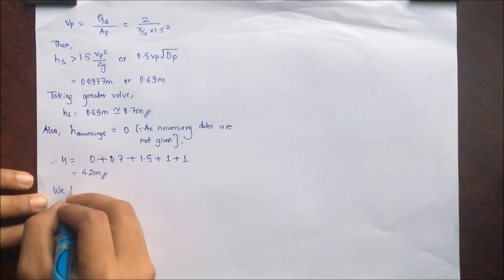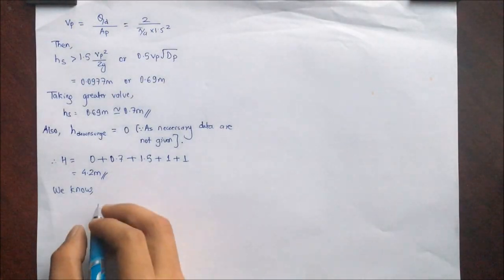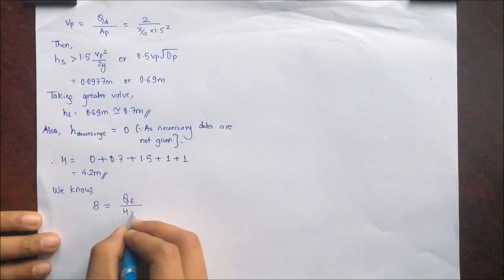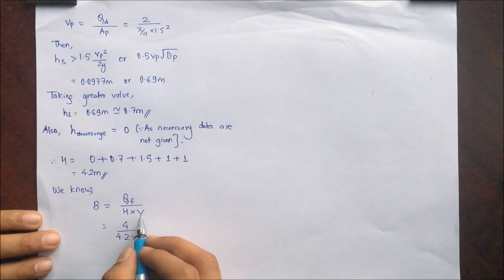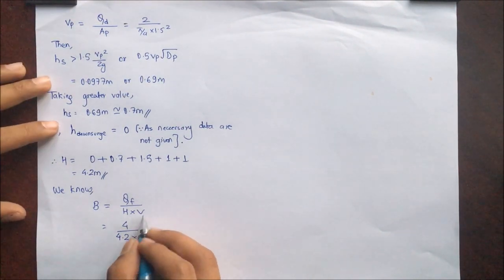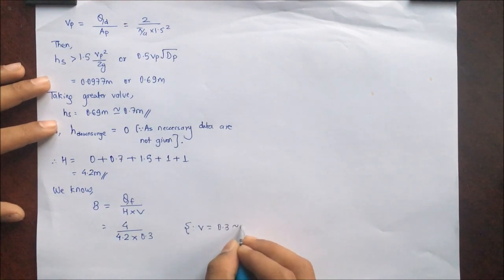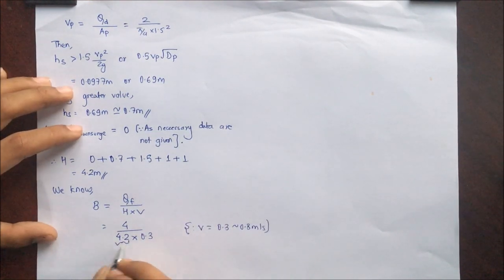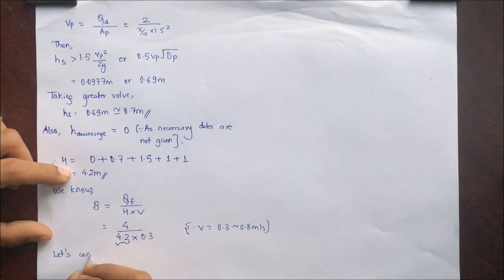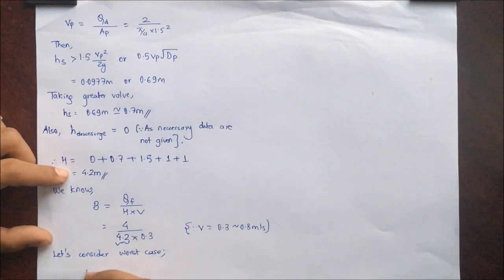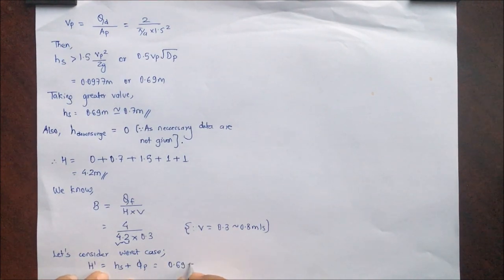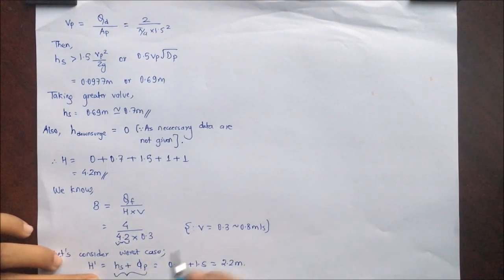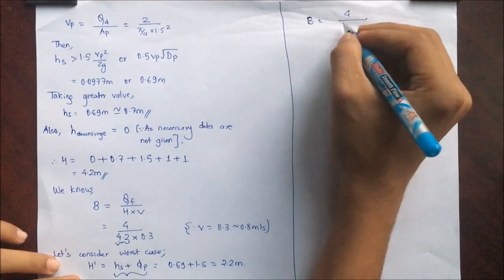Now, width B = Qf / (H × V). Substituting Qf = 4, H = 4.2, and limiting velocity V = 0.3 (limiting velocity is taken from 0.2 to 0.8), we calculate width. For the worst case, only submergence height and diameter of penstock are included, giving an effective height of 2.2 meter. Width for worst case = 4 / (2.2 × 0.3) = 6.06 meter.